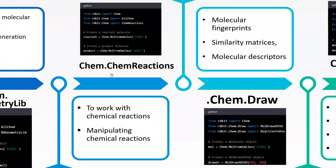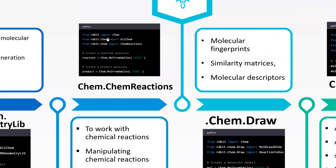The next sub-library under rdkit.Chem is ChemReactions. As the name implies, it provides tools to work with chemical reactions. The key class is the ChemicalReaction class, which provides tools for manipulating, visualizing, and handling chemical reactions. To activate this, import AllChem first, then import rdkit.Chem and ChemReactions, and you can start adding reactants and products to create reactions.